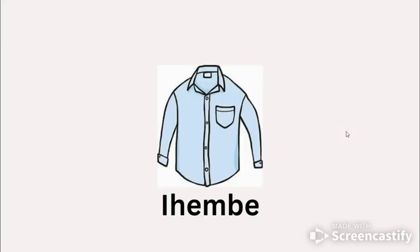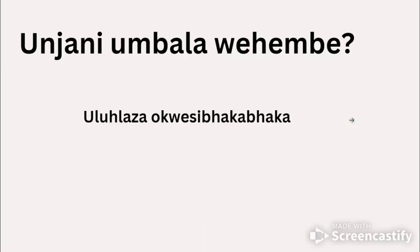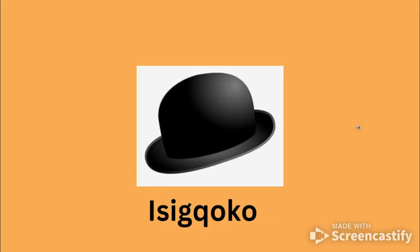Then we see ihembe — a shirt, ihembe. What color is the shirt? Blue. And blue in isiZulu is lushaza ogwesibagabaga — blue like the sky, lushaza ogwesibagabaga. Unjani umbala wengubo? What color is the shirt? Ulushaza ogwesibagabaga — it is blue, it is blue like the sky.